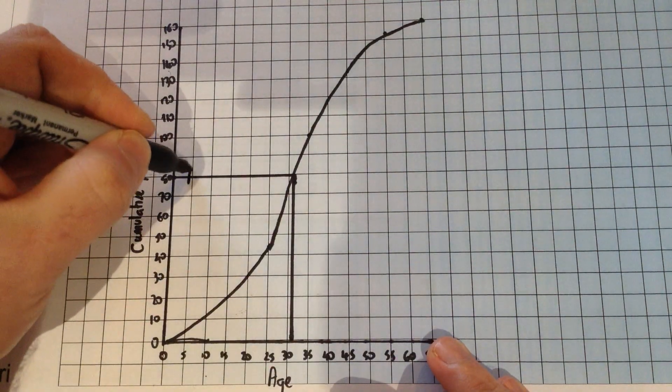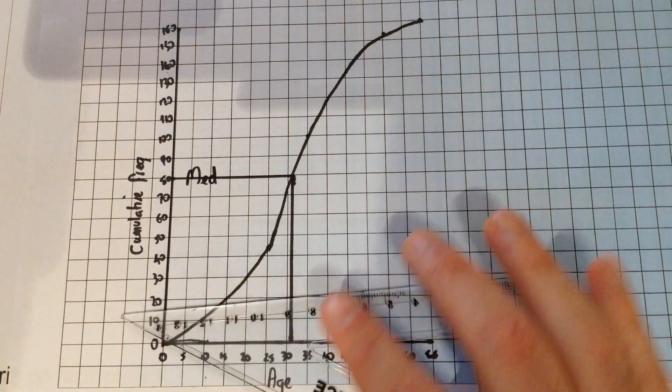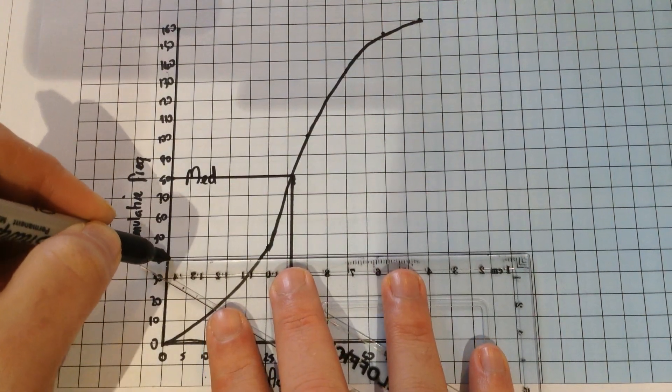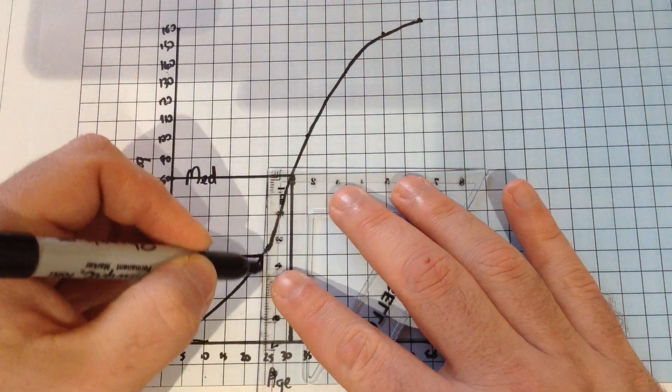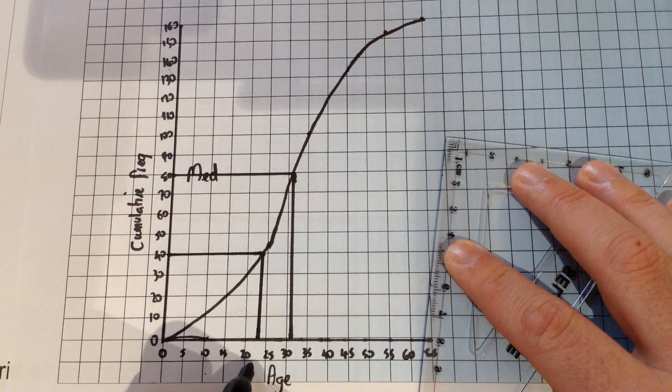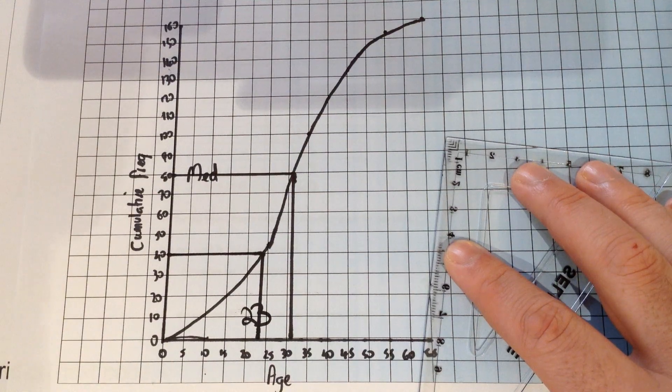If the median is the 80th person, the lower quartile will be half of that, so the 40th person. So if we do the same again and read a value from 40 as accurate as we possibly can, in my example I think that gives us 23 for my lower quartile.